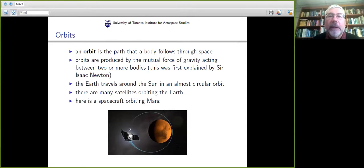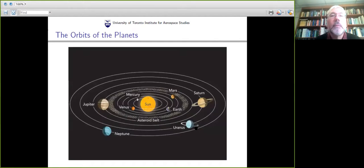Let's start out with the notion of an orbit. An orbit is the path that a body follows through space and orbits are produced by gravity. Basically two or more bodies will enter orbits due to the mutual gravitation acting between them. This was first explained by Sir Isaac Newton a long time ago. Some examples: the Earth goes around the sun, which takes about a year, and the shape of that orbit is almost a circle.